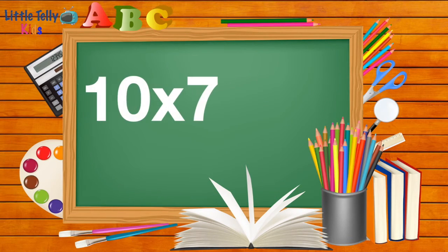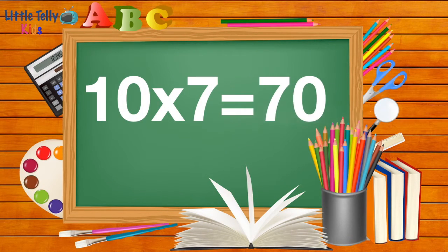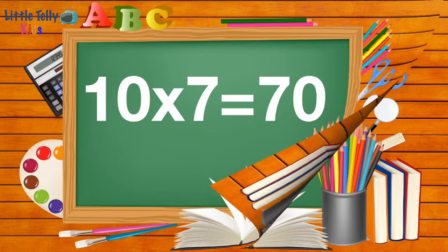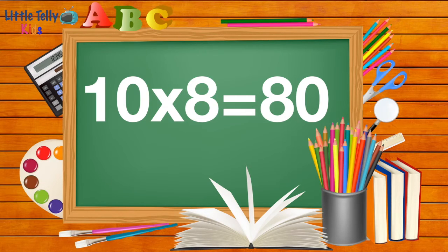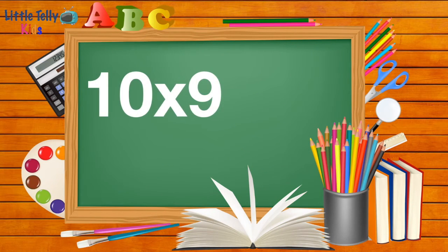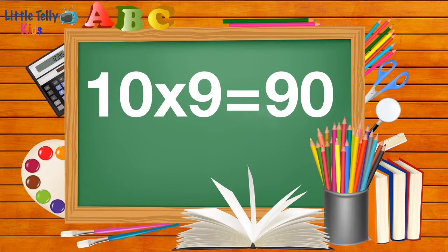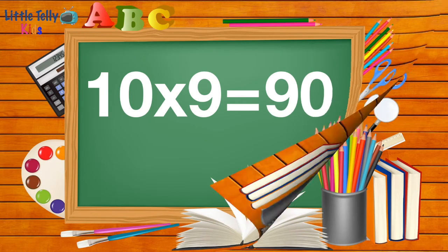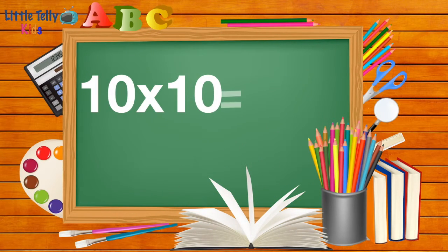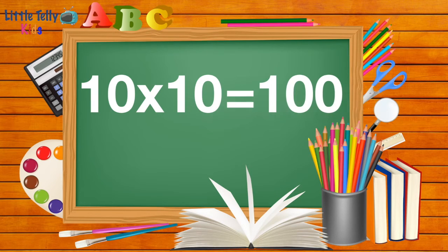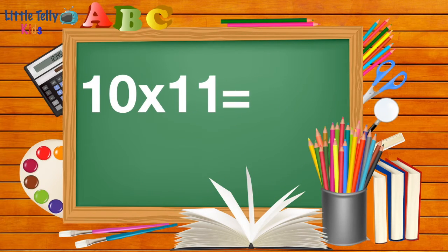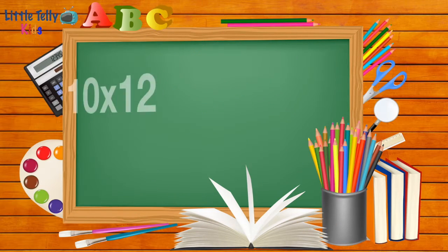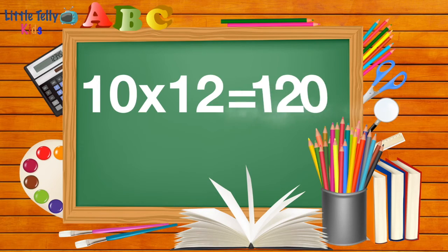Ten sevens are seventy. Ten eights are eighty. Ten nines are ninety. Ten tens are one hundred. Ten elevens are one hundred and ten. Ten twelves are one hundred and twenty.